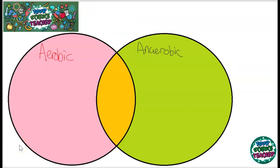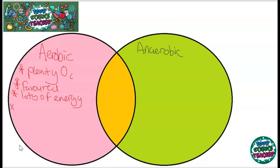There are two types of respiration. Aerobic respiration, which occurs when there is plenty of oxygen in the air, and anaerobic respiration as well. Aerobic respiration is favoured by your body because it produces lots of energy. The word equation for aerobic respiration is simply: oxygen plus glucose goes to water and carbon dioxide. I'm not going to do the balanced symbol equation — I did that in my photosynthesis video — it's just completely the opposite of that.